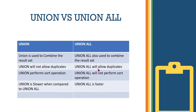This is very important. The main difference between Union and Union All is duplicates. Union does not allow duplicates. Also, Union performs a sort operation, while Union All will not perform a sort operation.